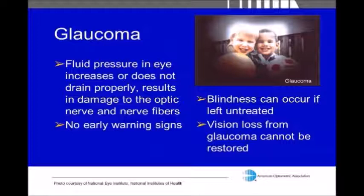Glaucoma actually affects the side vision first — the peripheral vision — and then slowly moves inwards. That's why it's often overlooked; you might not notice your side vision slowly going until it starts getting more central.